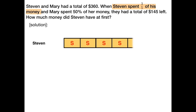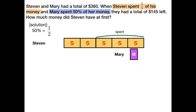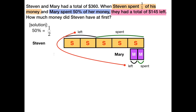Stephen spent three-fifths of his money. Mary spent half of her money. They had a total of $145 left. Stephen and Mary had a total of $360.